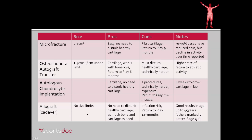Allograft or cadaver transplant has no size limits whatsoever, no need to disturb healthy cartilage, and we have as much bone and cartilage as we need — those are all the pros. The downside is a slight infection risk, a prolonged return to play of 12 months or more, and the cartilage is not quite as good as what you would see with ACI. Studies have found this option to be better in older age groups and can be used up to 45 years of age, whereas all the other procedures have shown markedly reduced results in patients older than 30 years of age.